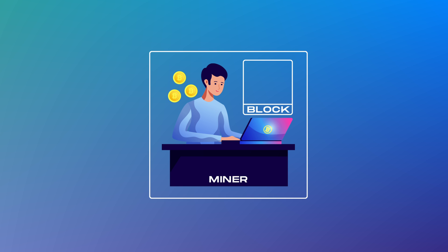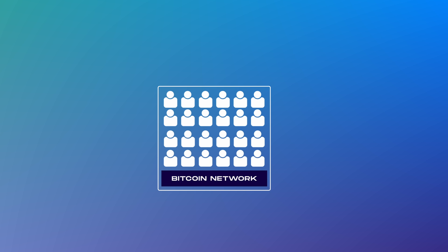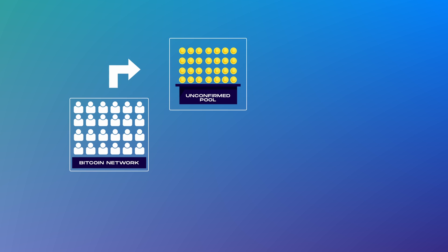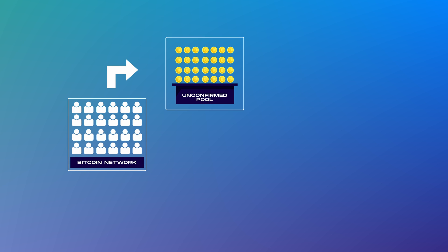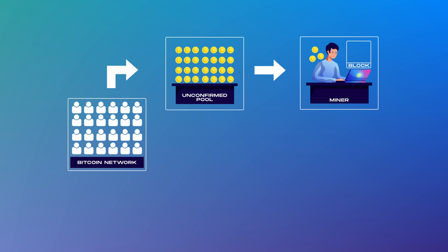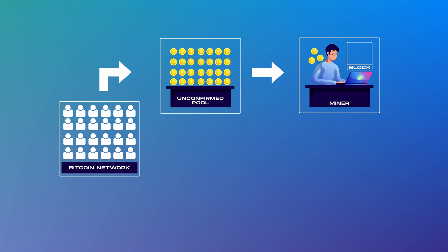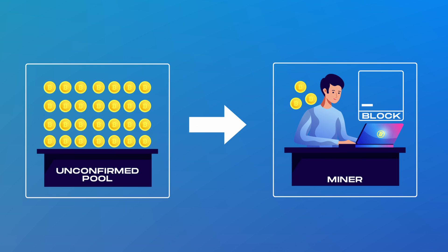Now let's take it to the Bitcoin network. Those who confirm transactions here are called miners. When Bitcoin is sent amongst different people in the Bitcoin network, it goes to what is called the unconfirmed pool. Miners verify and record these transactions into a ledger called a block.